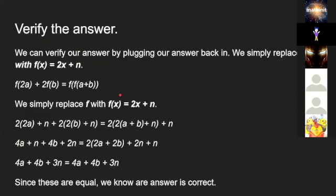Verify the answer. We can verify our answer by plugging our answer back in. We simply replace f with f(x) = 2x + n. So this is the original equation, and we simply replace f with f(x) = 2x + n. So that means we get 2(2a) + n + 2(2b + n) and that equals 2(2(a+b) + n) + n.